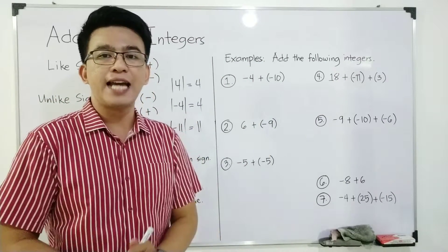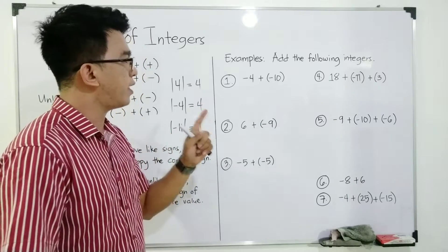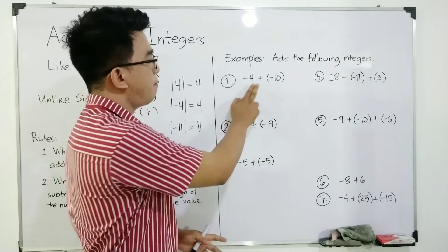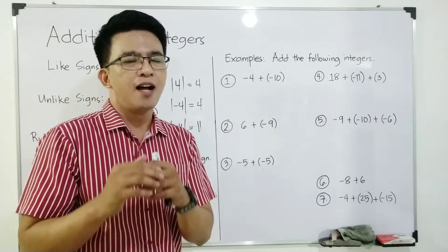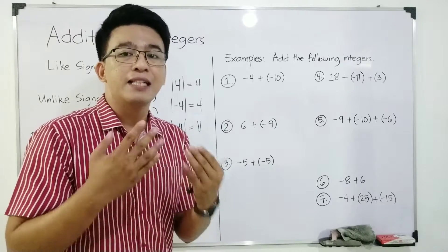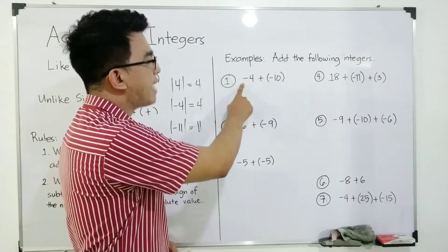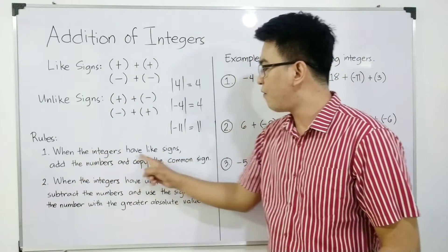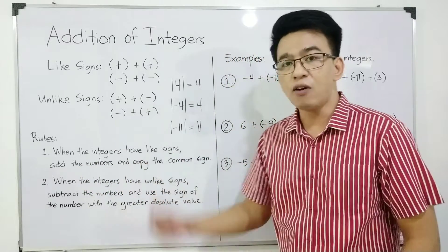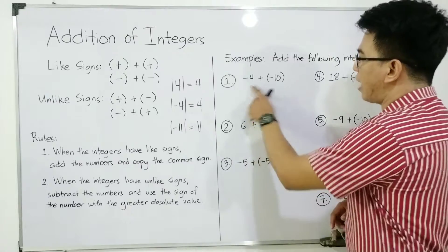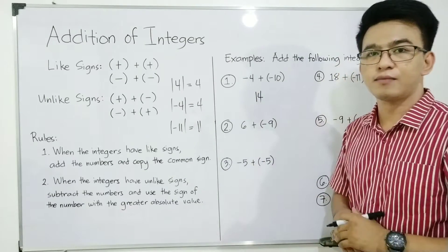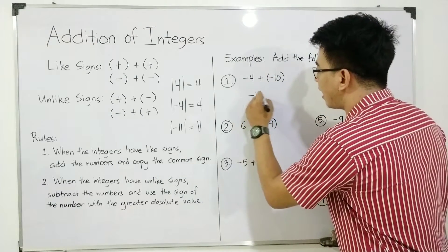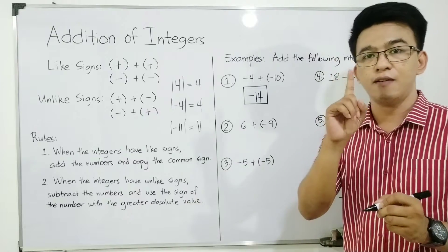Add the following integers. Number one, we have negative four plus negative 10. We need to think — meron ba sila ng like signs or meron ba sila different signs? As you can see, one is negative and the other is negative. Therefore, we will use the first rule. When the integers have like signs, add the numbers and copy the common sign. We will simply add 4 and 10 and it will become 14. Copy the common sign — ang common sign is negative. Therefore, the answer in number one is negative 14.